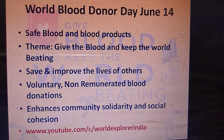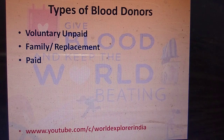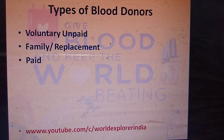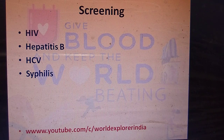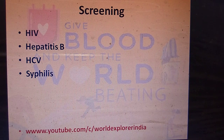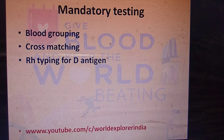Blood donation enhances community solidarity and social cohesion. Blood is stored in the refrigerator at 1 to 4 degrees centigrade. There are different types of blood donors: voluntary or unpaid, family members or replacement, and paid. Every donated blood undergoes screening for HIV, Hepatitis B, HCV, and syphilis to avoid transmission of these diseases.